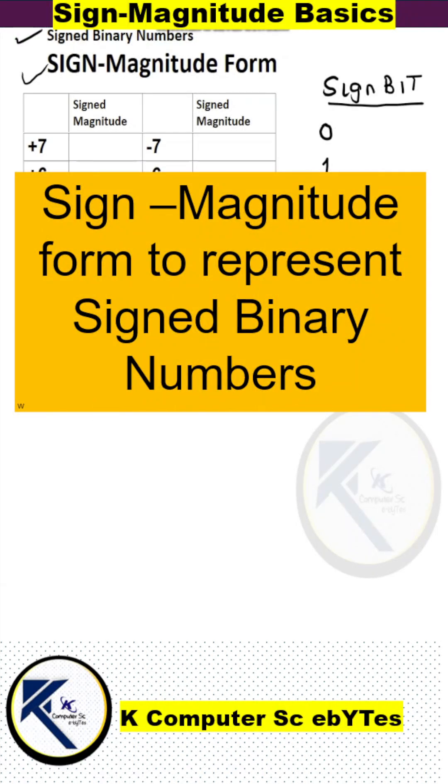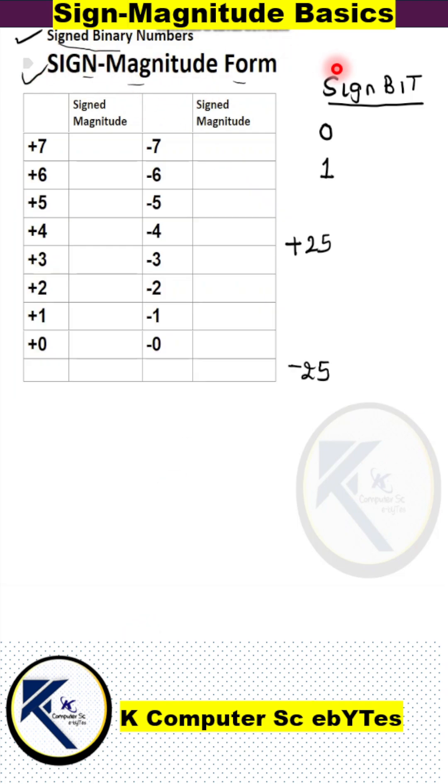Signed magnitude form is one of the methods to represent signed binary numbers in computer systems. It includes both the positive and negative numbers.